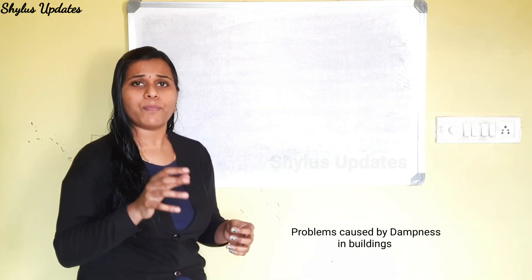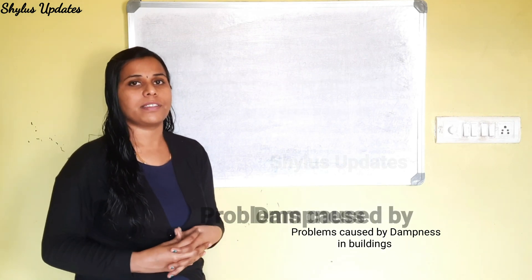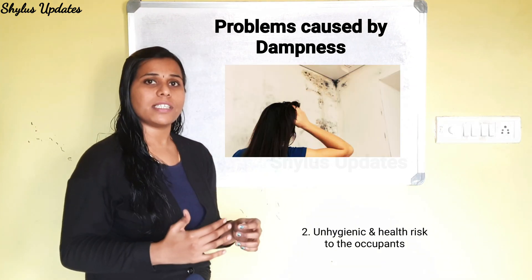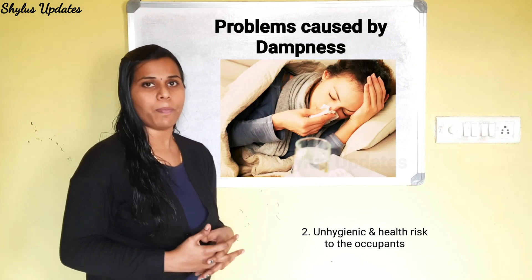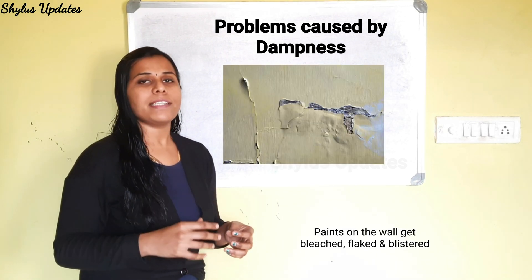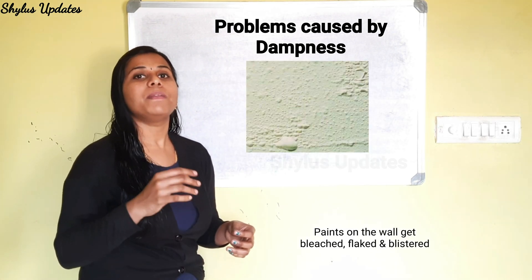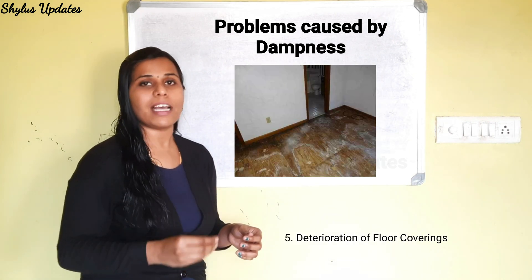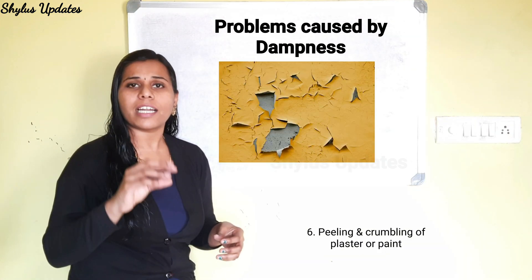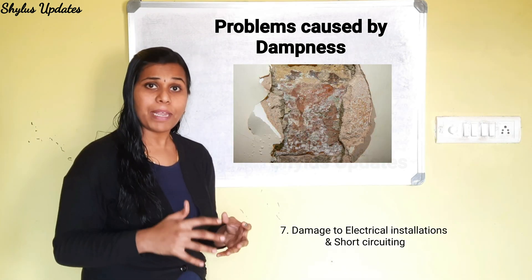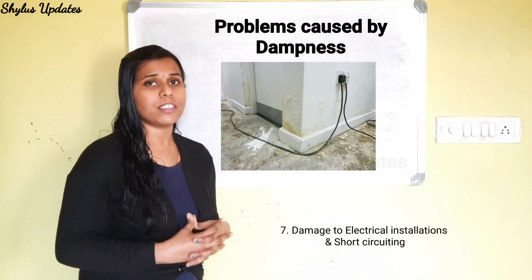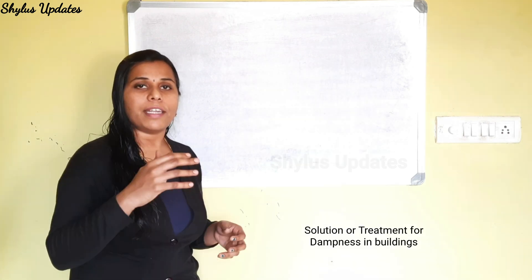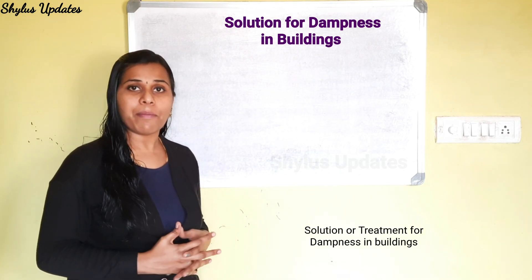Now let's see what are all the problems caused by dampness in buildings. The first important thing is it reduces the lifespan of the building. It also creates unhygienic and health risks to the occupants, damage of paints — paints on the wall get bleached, flaked, and blistered. There is growth of vegetation on walls and termites, deterioration of floor coverings, peeling and crumbling of plaster or paint, damage to electrical installations and short circuiting, and also dampness causes corrosion of metals.